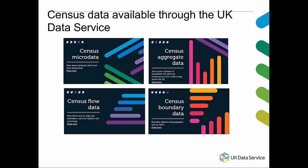Census flow data provides data on migration — how people travel to work on census day and also their last address before the census, giving some information on how people are moving around the country. We also have supporting data such as census boundary data, which are the geographic boundaries for the various census output geographies, and these can be used to visualize census data. In this workshop we'll be using census boundary data in association with census stats to create maps and other visualizations. Today you'll be using both census aggregate data and census boundary data.